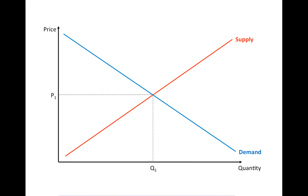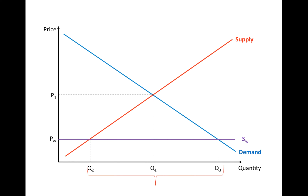We introduce international economics by adding the world supply. We assume in this case that the world supply is more competitive than our local firms in general, and therefore the world price is below our equilibrium price. At this PW price we will be producing Q2 and consuming Q3. In international economics this distance is simply referred to as the imports before the tariffs. We can also represent the consumer surplus and producer surplus, which are the distances between the demand and PW, and the supply and PW.